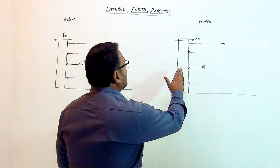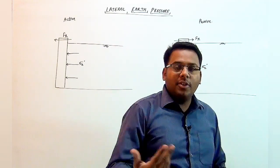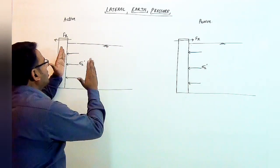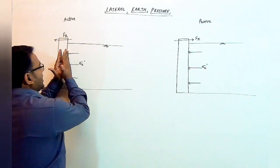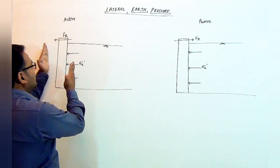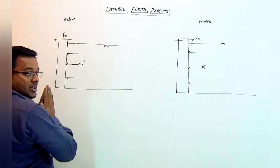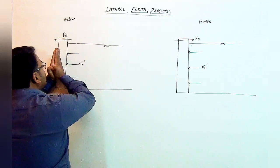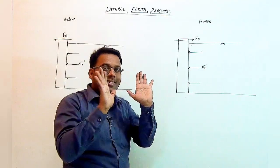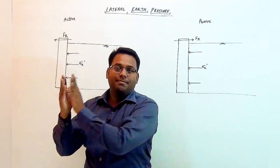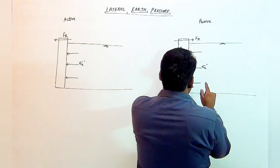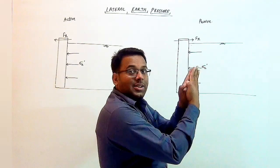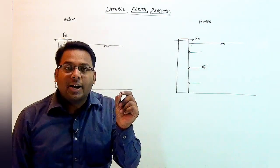In the active state, the net forces on the wall and soil act in the same direction, while in the passive state they act in opposite directions. Using a hand analogy: if both hands move in the same direction, the contact pressure between them is very low. But if they are forced in opposite directions, the contact pressure is much greater.